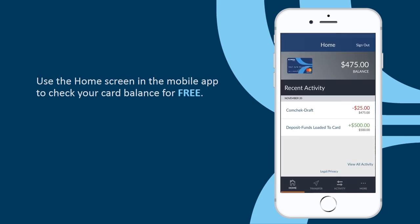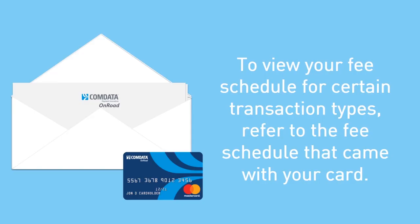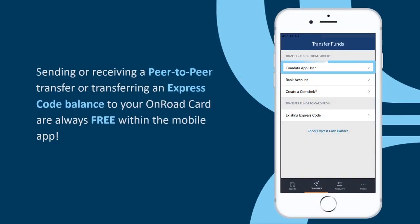Use the Home screen in the mobile app to check your balance for free. The balance will reference your available balance, taking into account any transactions that have occurred but not yet posted to your card's history. To view your fee schedule for certain transaction types, refer to the fee schedule that came with your card. Sending or receiving a peer-to-peer transfer or transferring an express code balance to your OnRoad card are always free within the mobile app.